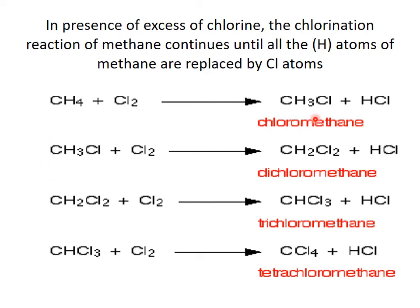The obtained product in the first reaction, CH3Cl, will react again with Cl2, where one hydrogen atom is replaced by one Cl atom, giving CH2Cl2. This product will react again with Cl2, and one hydrogen atom is replaced by one Cl atom, giving CHCl3, called trichloromethane due to the presence of three chlorine atoms. This compound will also react with Cl2, so the last hydrogen atom is replaced by a Cl atom, giving CCl4, called tetrachloromethane, since it has four chlorine atoms. The previous compound, CH2Cl2, is called dichloromethane due to the presence of two chlorine atoms.